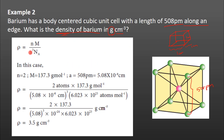Let's look at the density formula. Rho is equal to n times m, divided by a-cubed times Avogadro's number. Here, n is the number of atoms in the unit cell, M is the molar mass, a-cubed is the volume, and N is Avogadro's number.